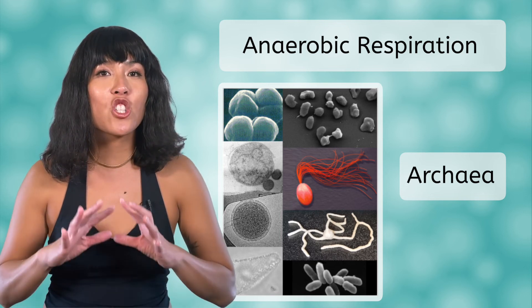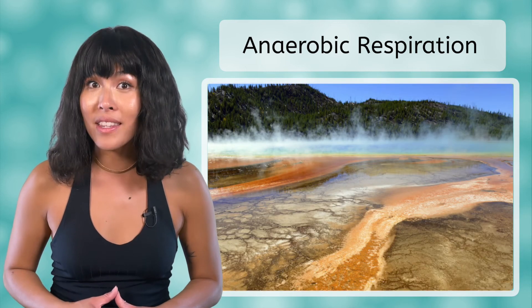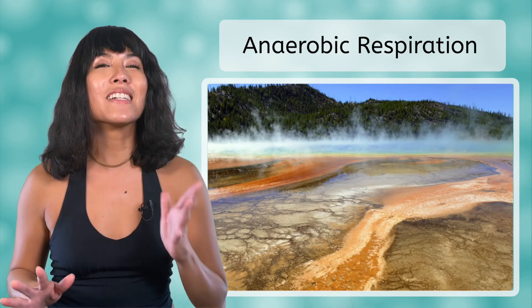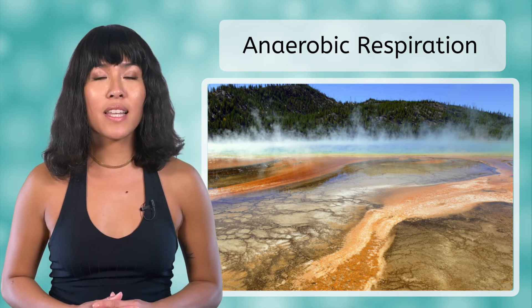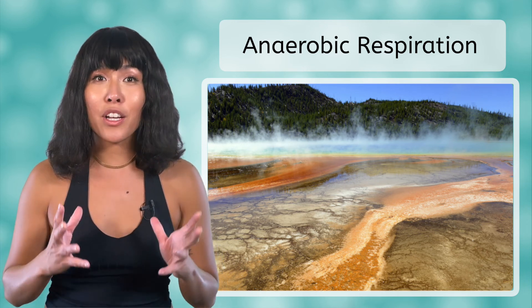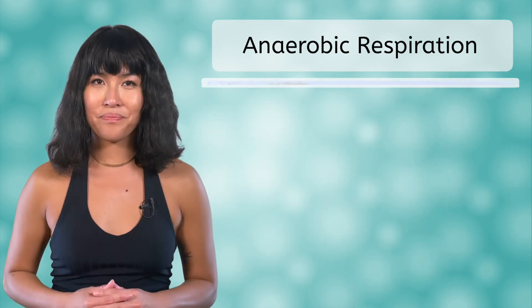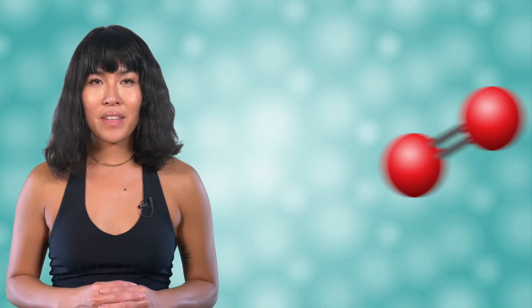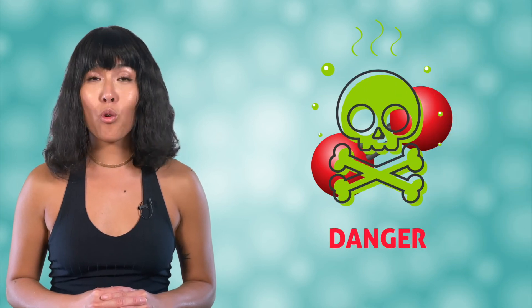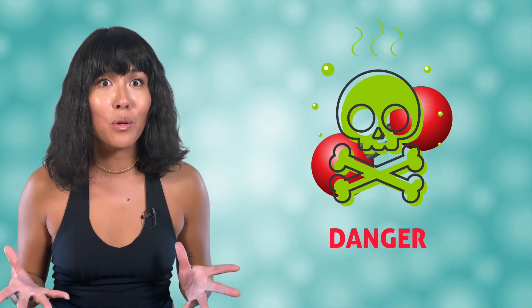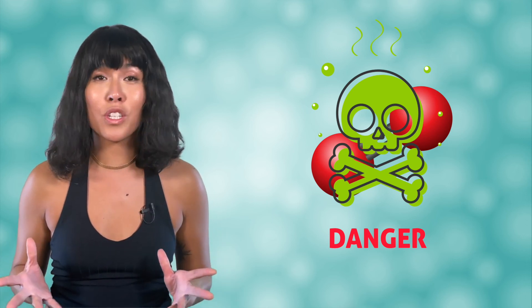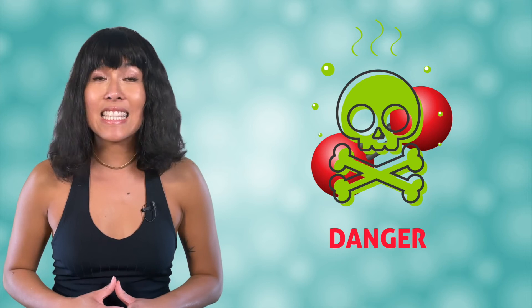Archaea tend to live in extreme environments, for example near hydrothermal vents. We'll learn more about these organisms in a later unit. For now, all we need to know is that some forms of life can perform anaerobic cellular respiration by substituting something else for oxygen. Some bacteria and archaea can switch between aerobic and anaerobic methods of producing ATP. Others can only perform anaerobic respiration. In fact, oxygen is toxic to some organisms and will kill them if they are exposed. It's wild to think that a substance which is so essential for our survival is deadly to others.